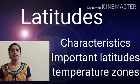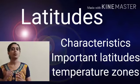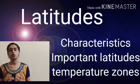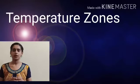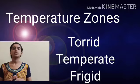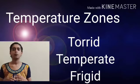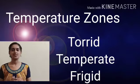So students, in the last video we discussed latitudes — what are the characteristics of the latitudes, what are the important latitudes, and the importance of those important latitudes. That is nothing but differentiating the globe into temperature zones, which we also called as heat zones. In that we learnt about three temperature zones or three heat zones: the hottest is torrid, moderate climate is temperate, and the coolest is frigid.